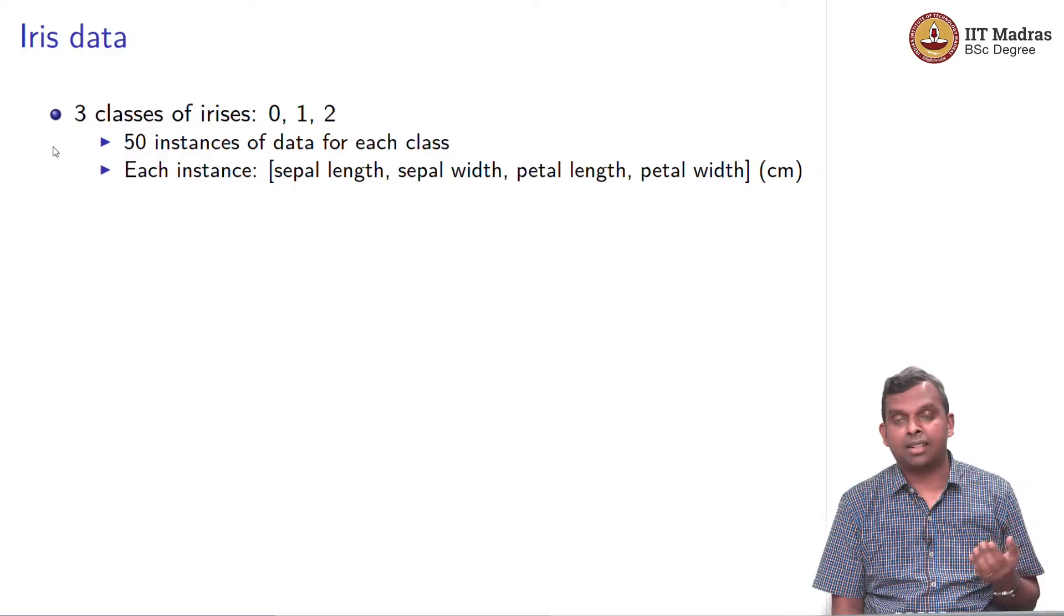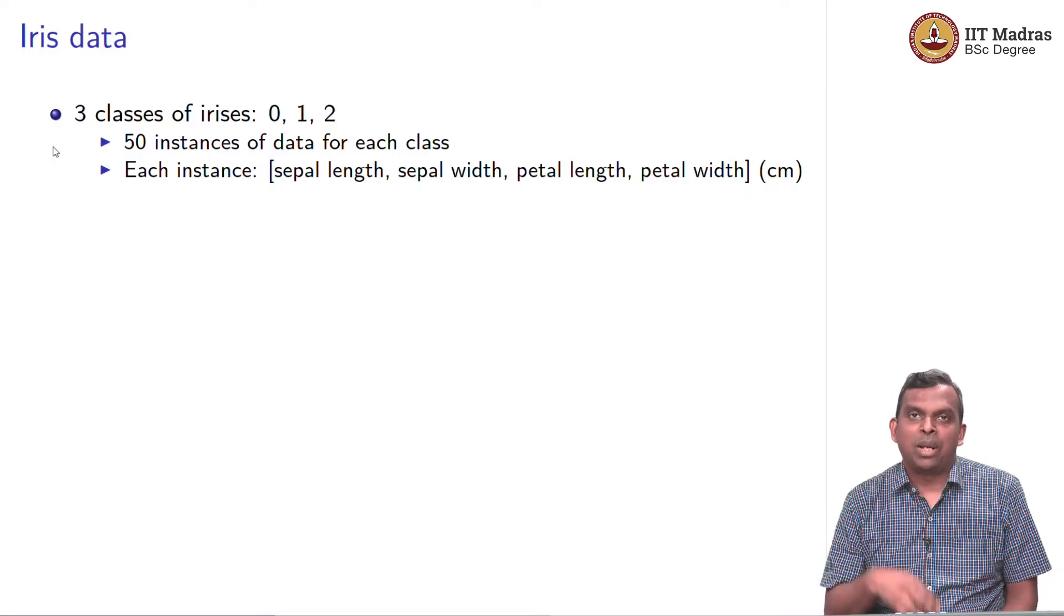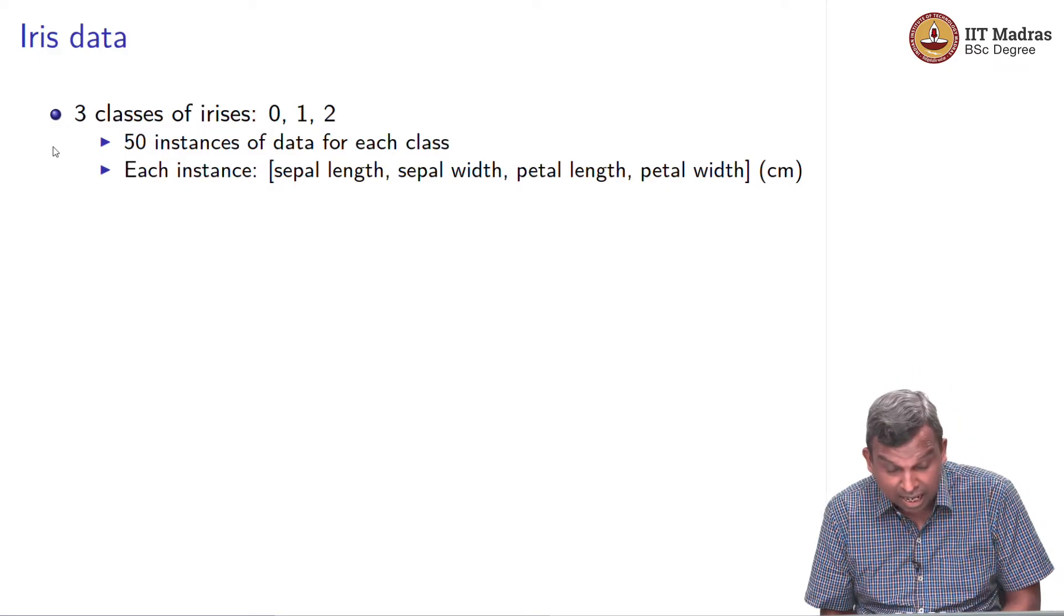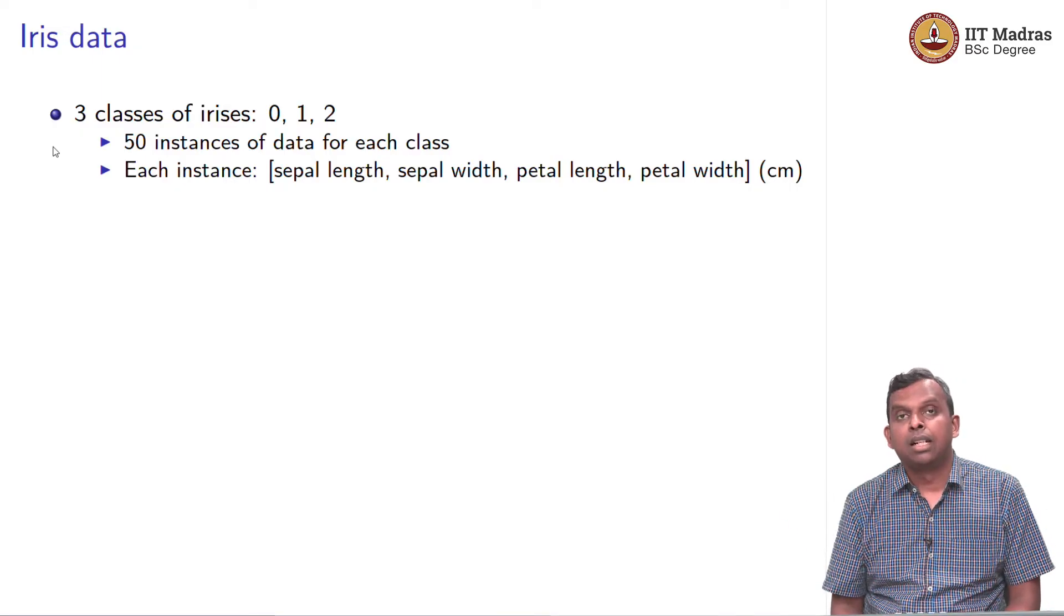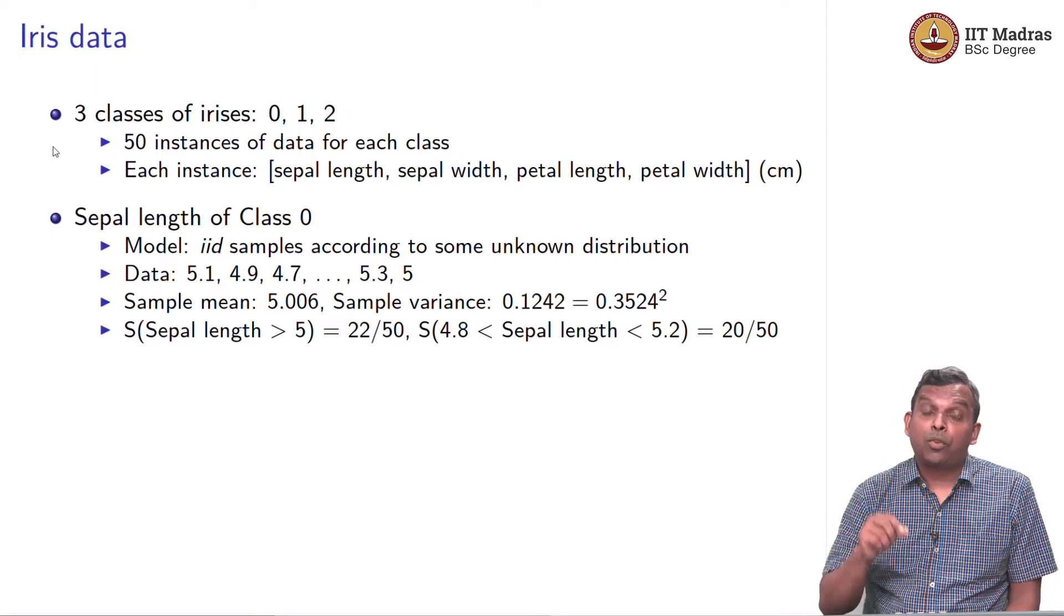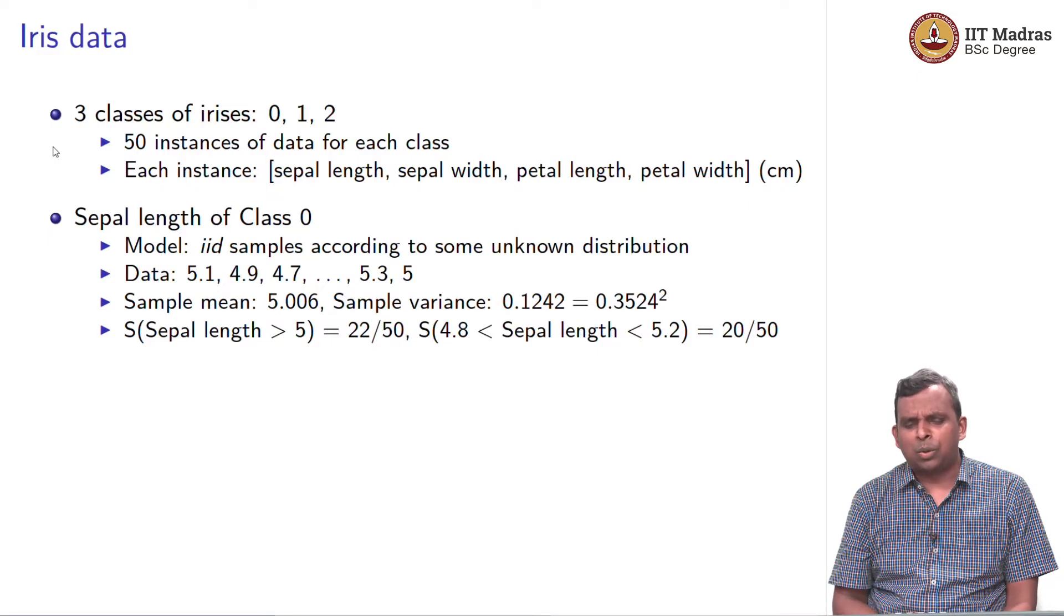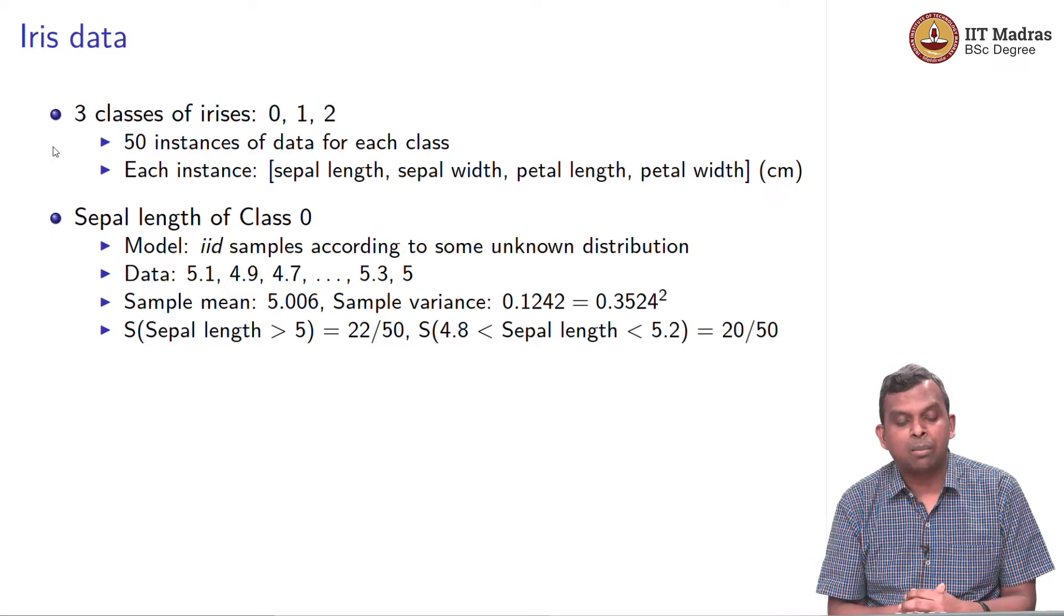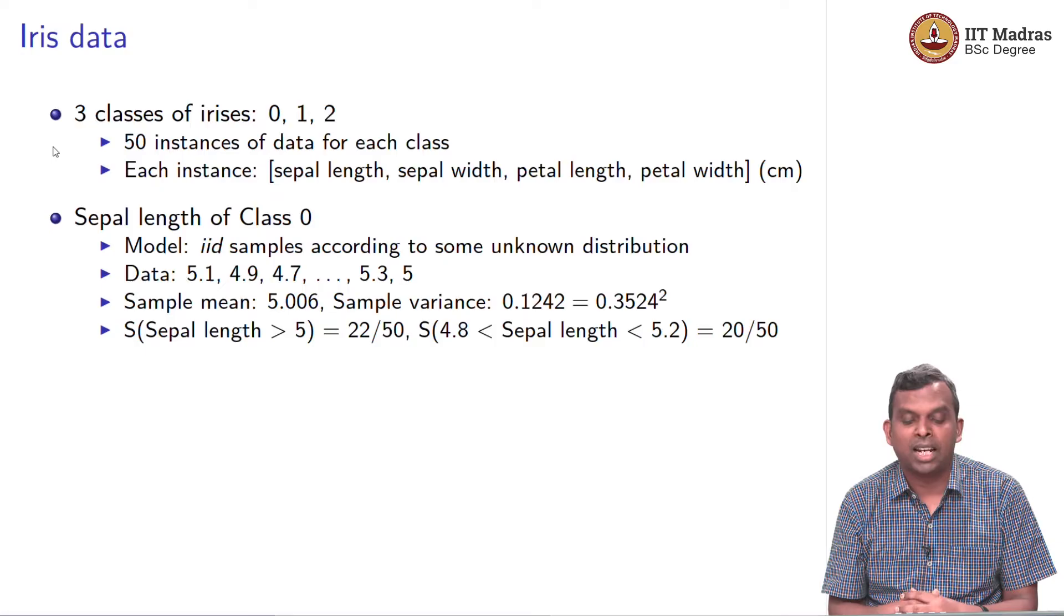So let us begin with the iris data. You remember the iris data, there are three different classes of iris with sepals and petals and the length and the width. It is a very popular data set in statistics. There are three classes 0, 1 and 2. In each class, there are 50 instances of data. Think of it as in each class, there are 50 irises and you have measured the sepal length, sepal width, petal length, petal width for each of these 50 irises. The data would look like that 5.1, 4.9, 4.7 and so on.